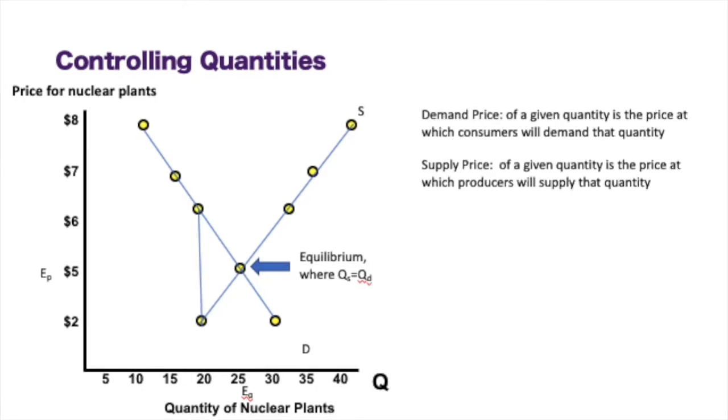Now, if the government were to come in and they wanted to put a control on the quantity of nuclear power plants in the country, and they want to put that at 20, we see that the demand price, and that's where consumers want to buy. And then we'll see the supply price, which is where producers want to sell.